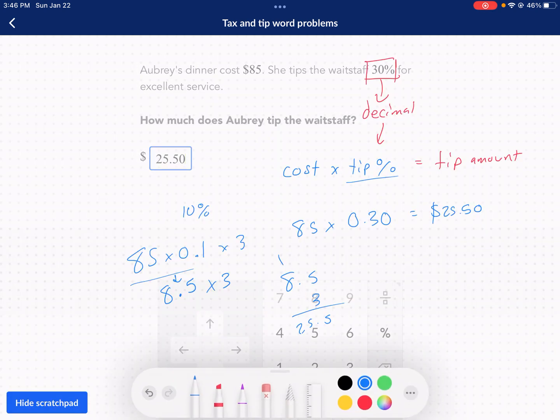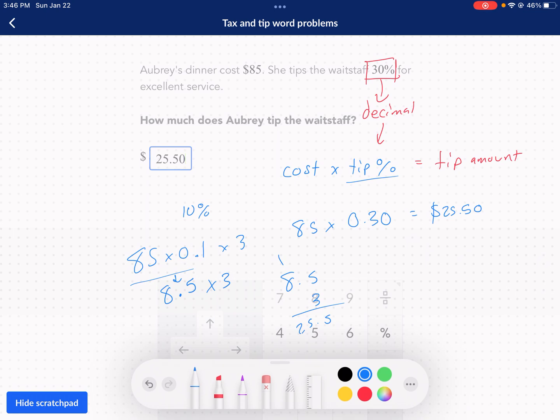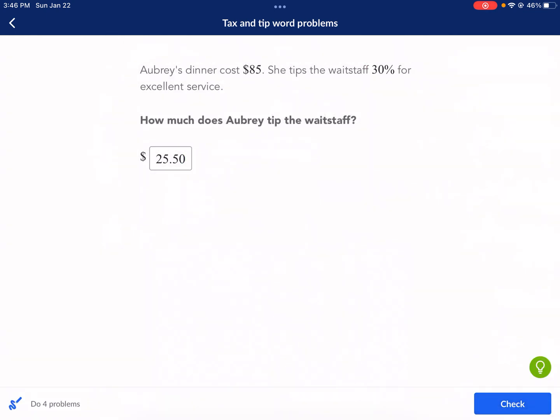Now, if you want to just use a calculator and do 85 times 0.3, you're going to get the same thing. So that's going to be our tip amount.